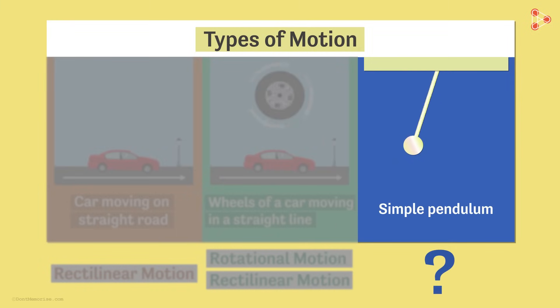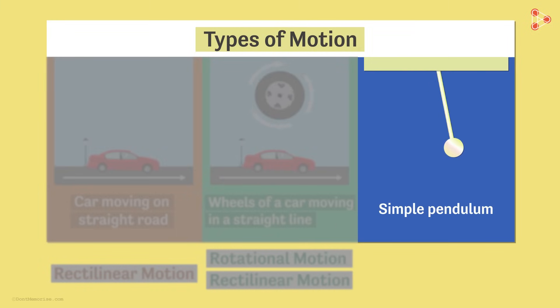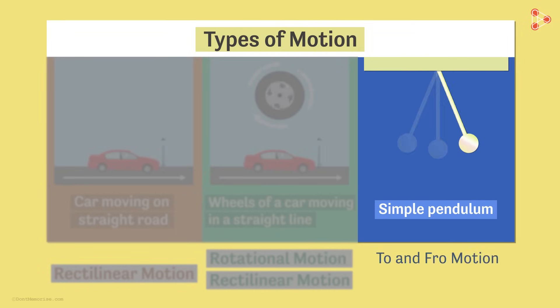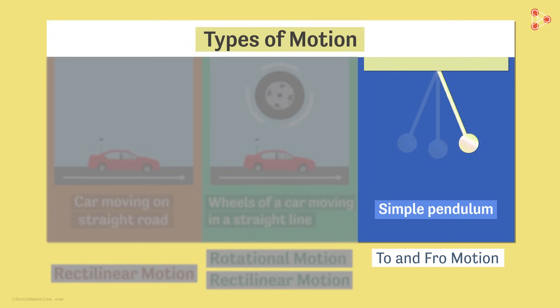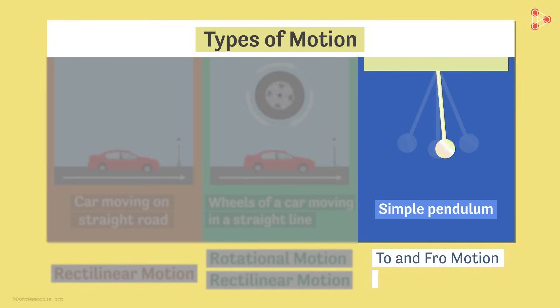What about the simple pendulum? We know that a simple pendulum performs to-and-fro motion. This to-and-fro motion repeats itself in equal intervals of time, so it is undergoing periodic motion.